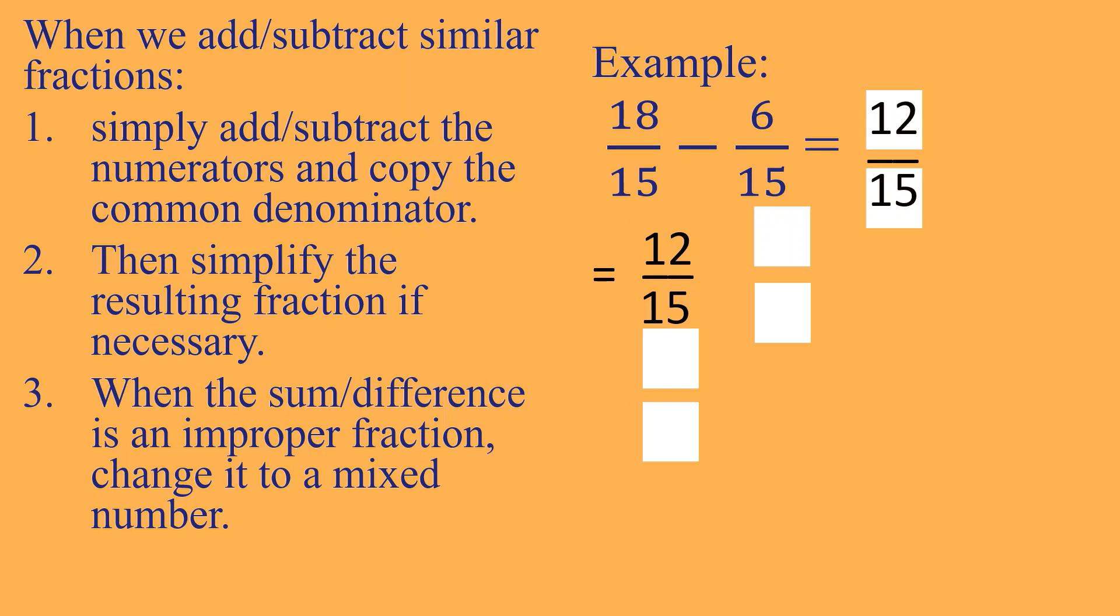So, ano ang pwedeng pang-divide sa 12 at saka 15? I-divide natin sila ng 3. Sa taas at saka baba. 12 divided by 3 is equal to 4. And 15 divided by 3 is equal to 5. So, yung 4 over 5 or 4 fifths is our final answer. Meron pa bang pwedeng pang-divide yan sa dalawa? Common factor maliban sa 1? Wala na. So, that is our final answer. 4 over 5 or 4 fifths.